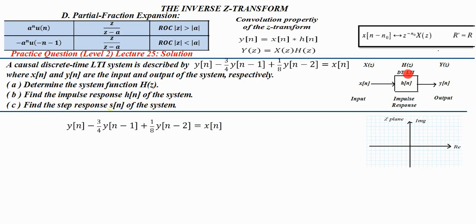LTI system means a system that obeys linearity and time invariant properties. Here X(z) represents the Z-transform of x(n) and H(z) represents the transfer function of the system. H(n) is the impulse response and Y(z) is the Z-transform of the output y(n). By the convolution property, Y(z) equals X(z) times H(z), so H(z) equals Y(z) divided by X(z).